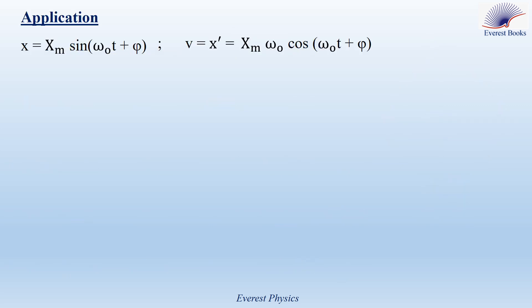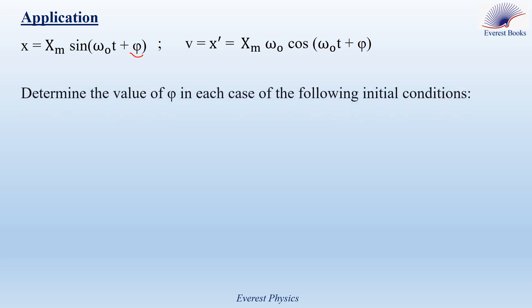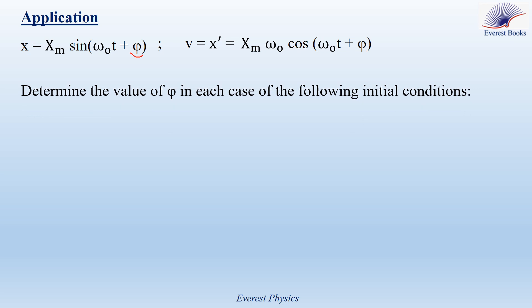Now let's solve an application to determine the value of the initial phase angle phi. Consider the time equation of simple harmonic motion: x equals xm sine of (omega0 t plus phi), and v equals x prime equals xm omega0 cosine of (omega0 t plus phi). Determine the value of phi in each of the following initial conditions.